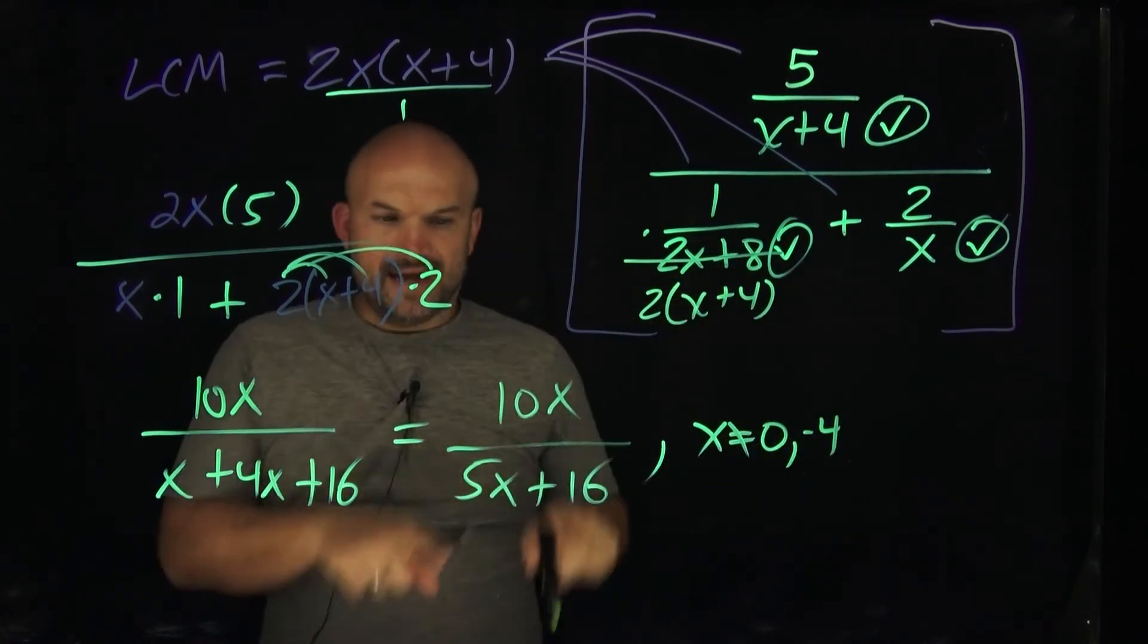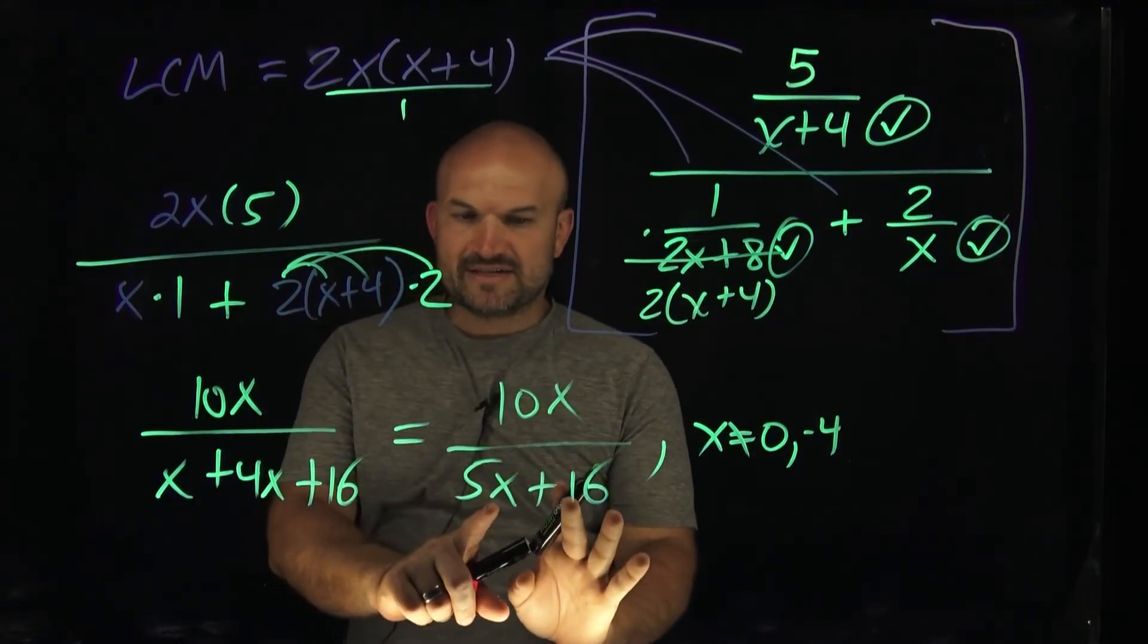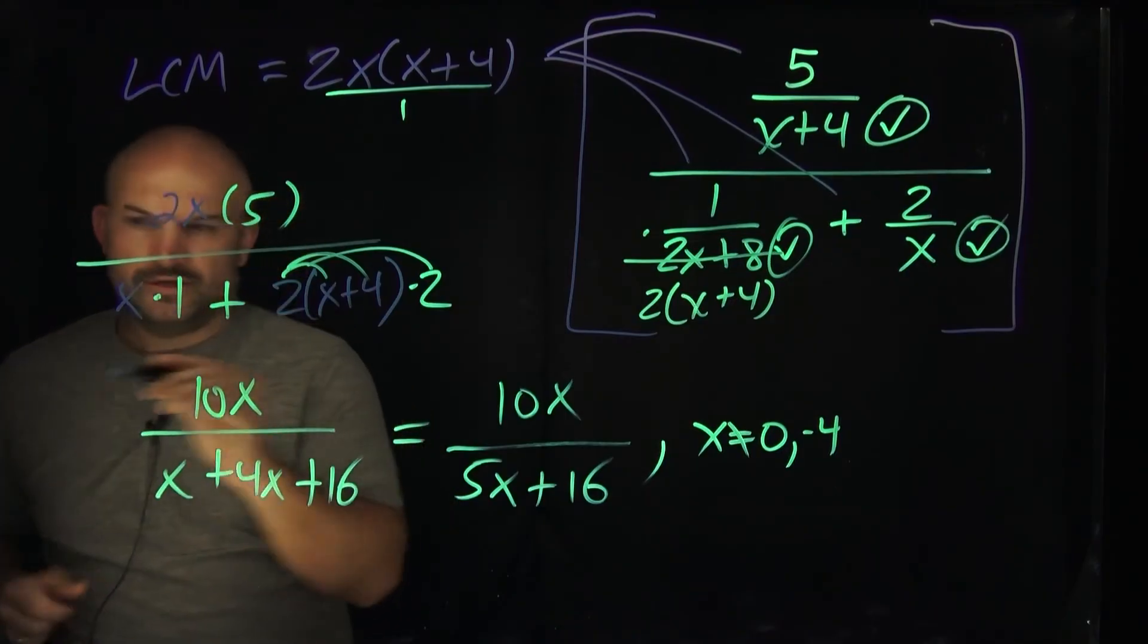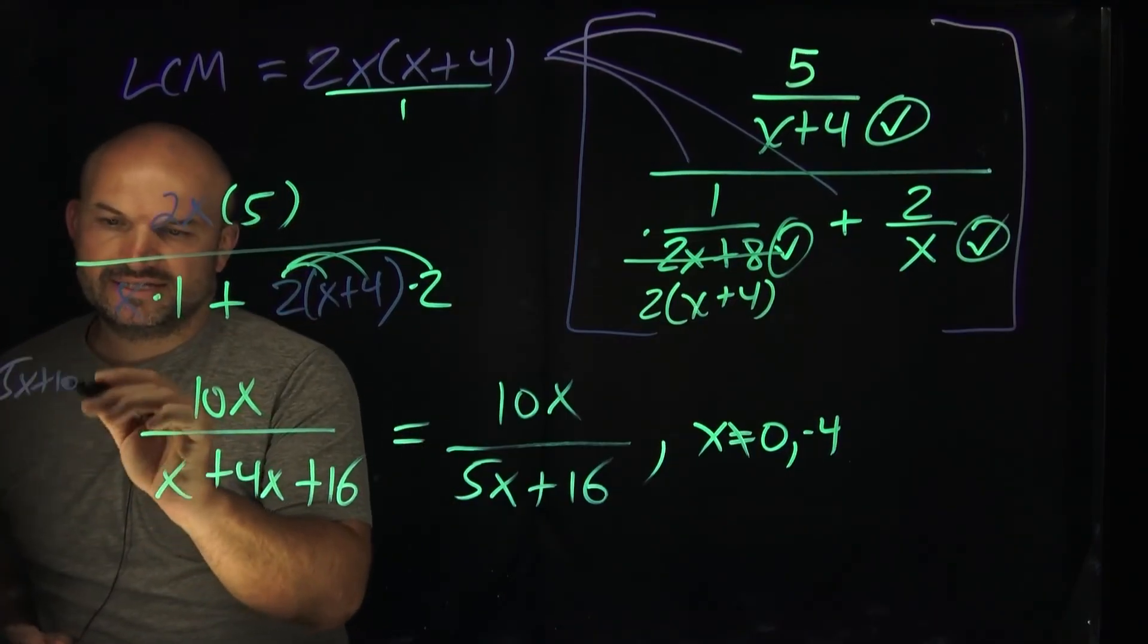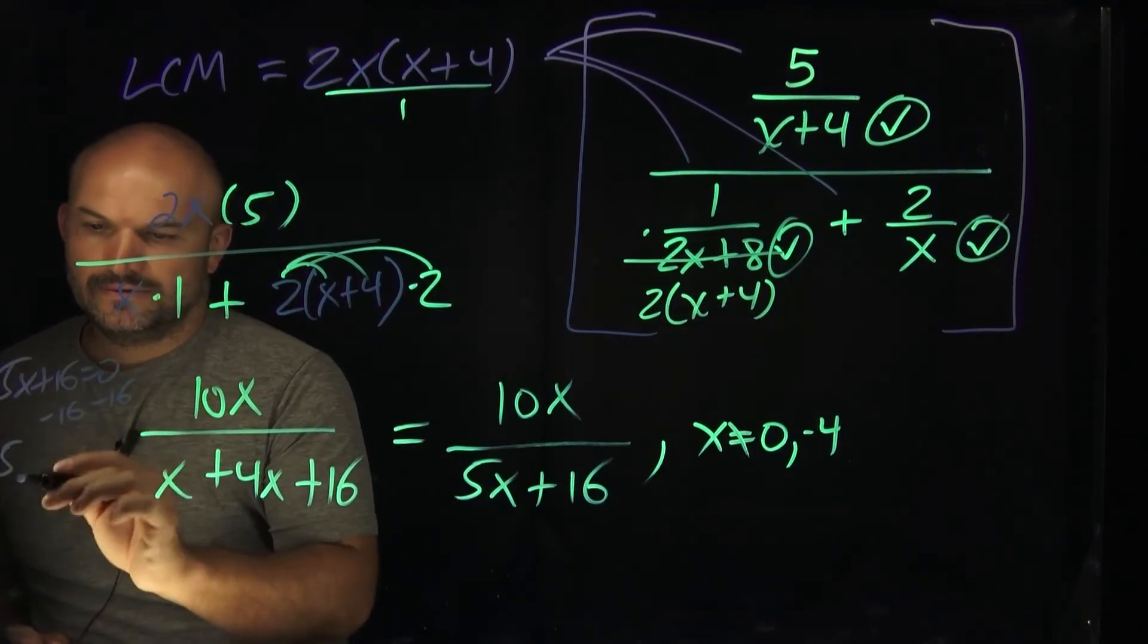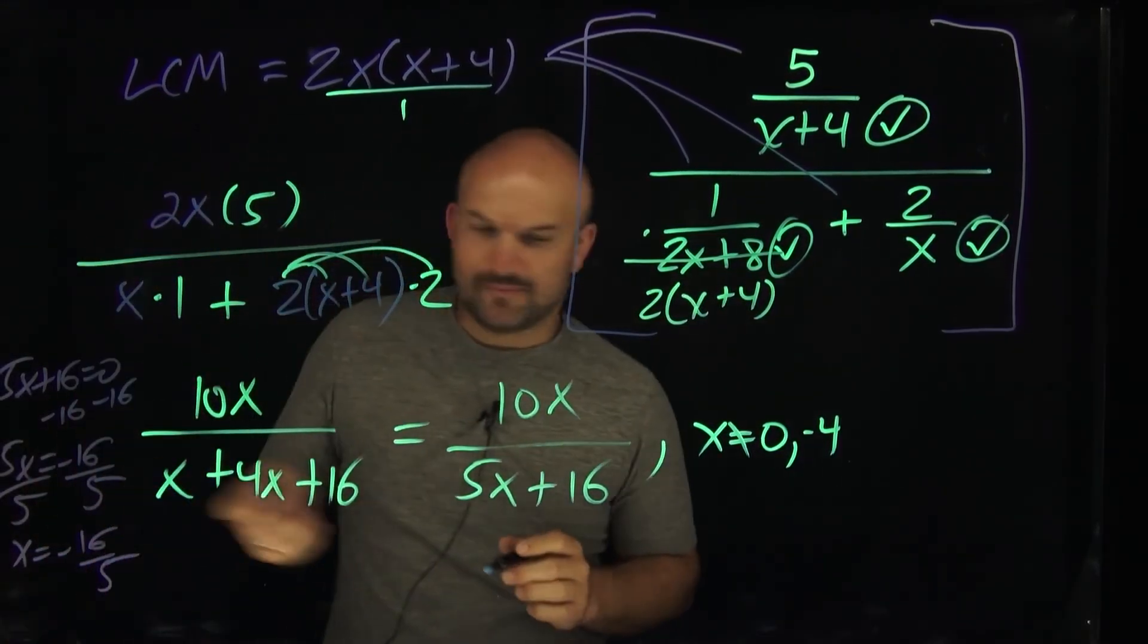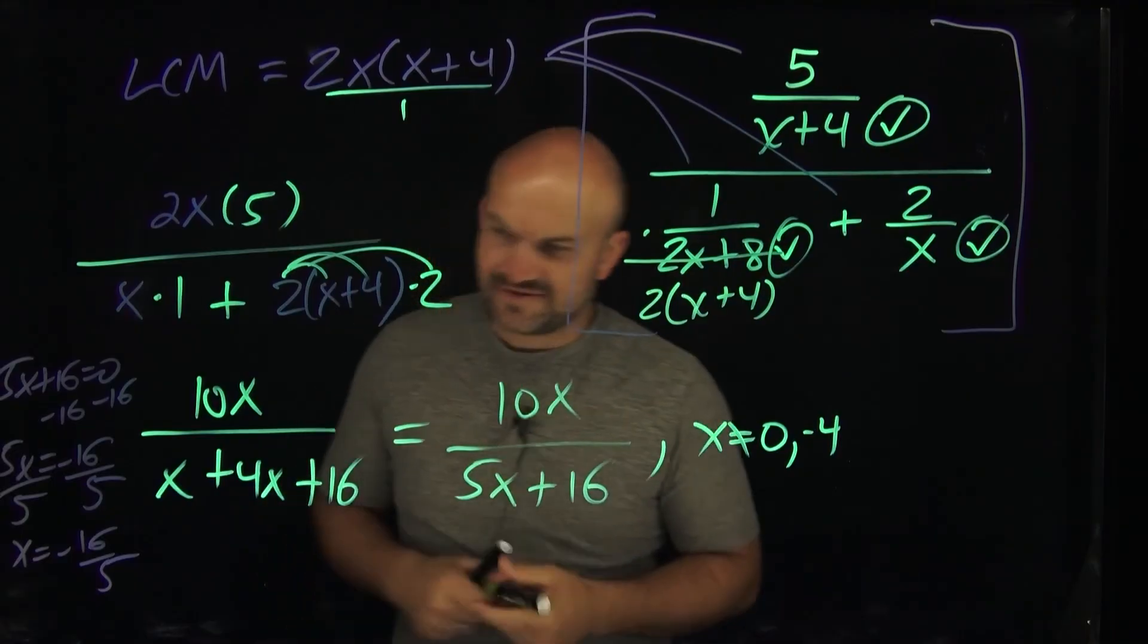This would be the same thing. And then also here, if you were to set 5x plus 16 equal to 0, what would that be? Well, let's just do the work over here. If I had 5x plus 16 equal to 0, applying just your operations here, you get x is equal to negative 16 over 5.